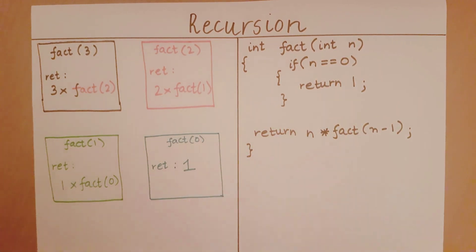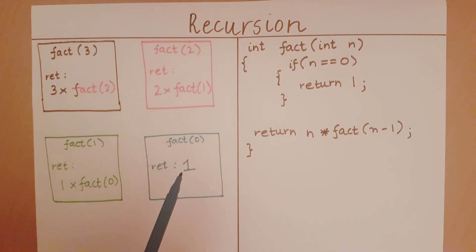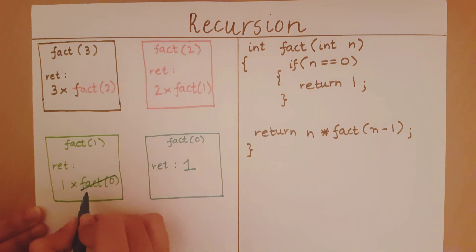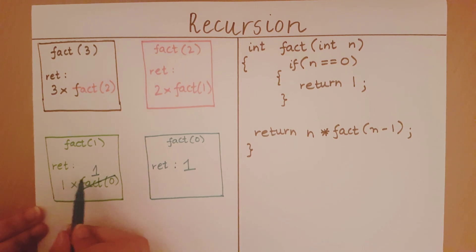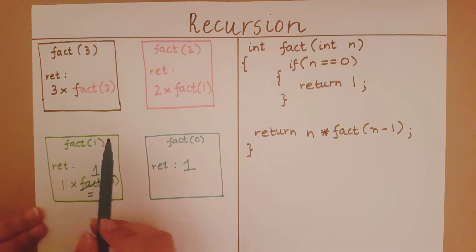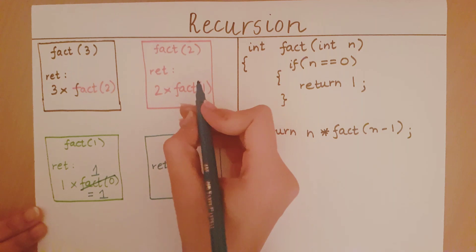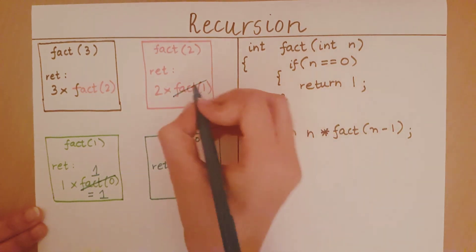So now I return 1 from factorial of 0. When I return from factorial of 0, I return this value to the point at which factorial of 0 was called. This function is done executing and I replace it with its return value. So now factorial of 1 must return 1 into 1, which is 1. Factorial of 1 provides its return value at the time when it was called, replacing the function call with its return value.